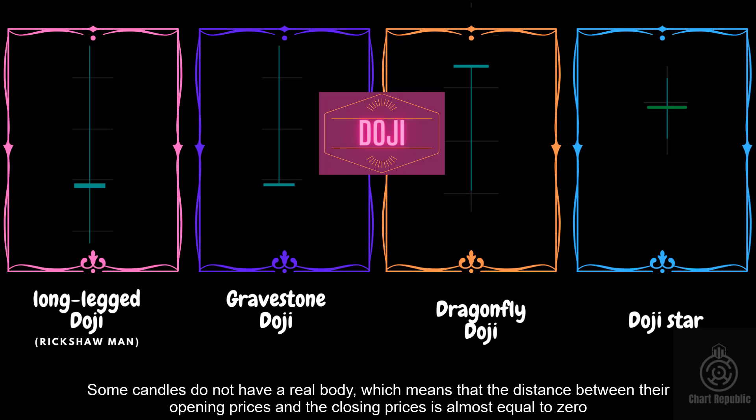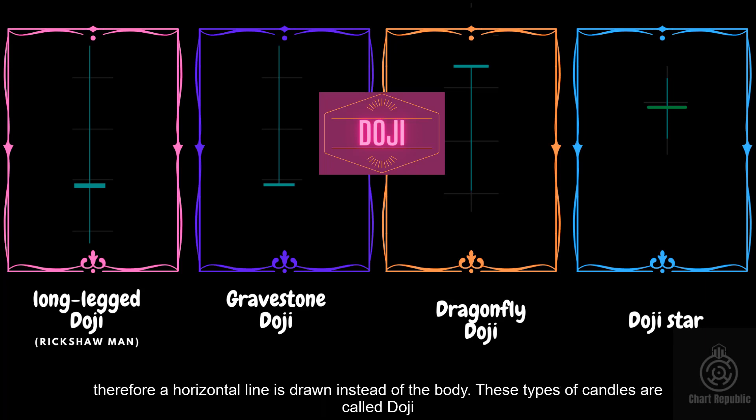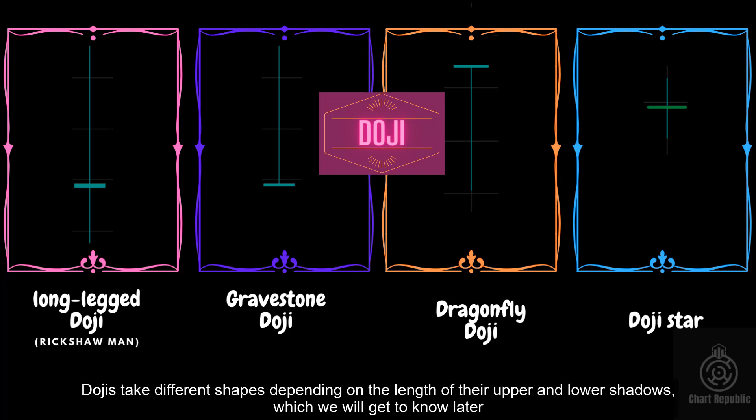Some candles do not have a real body, which means that the distance between their opening prices and the closing prices is almost equal to zero. Therefore, a horizontal line is drawn instead of the body. These types of candles are called doji. Dojis take different shapes depending on the lengths of their upper and lower shadows, which we will get to know later.